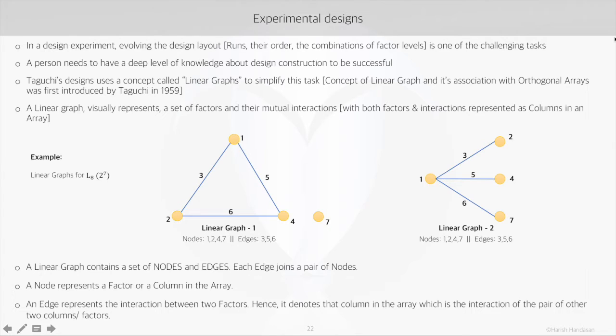A linear graph visually represents a set of factors and their mutual interactions. These factors and interactions are then represented as columns in the array.